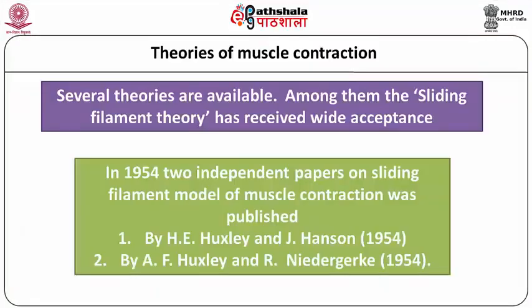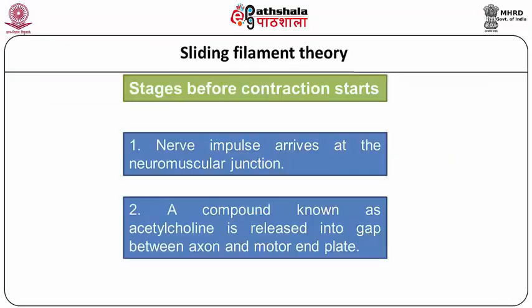In 1954 two independent papers came out on the sliding filament theory, or sliding filament model of muscle contraction. The authors were H.E. Huxley and J. Henson in one group, and A.F. Huxley and R. Niedergerke in another group. The sliding filament theory is the most accepted theory of muscle contraction to date, since it can explain the majority of the actions in detail.